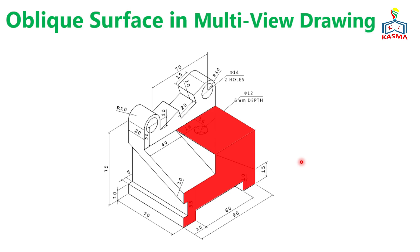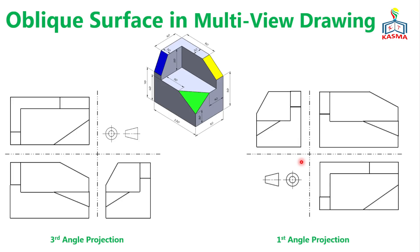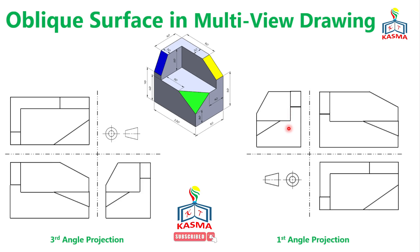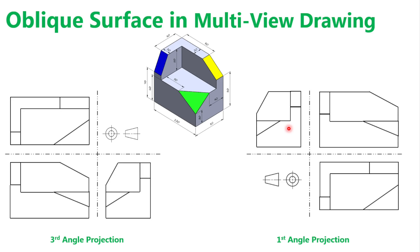To construct the object in the first angle projection system, the front view stays in place, the top view moves to the bottom of the front view, and the right side view moves to the left of the front view. The views themselves are the same — only their positions differ. Thank you for watching, and see you soon.